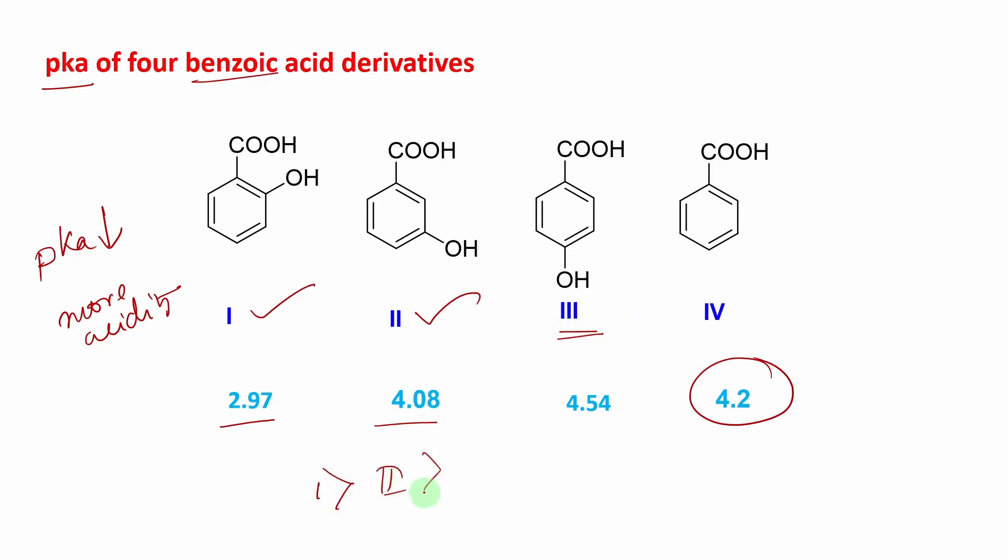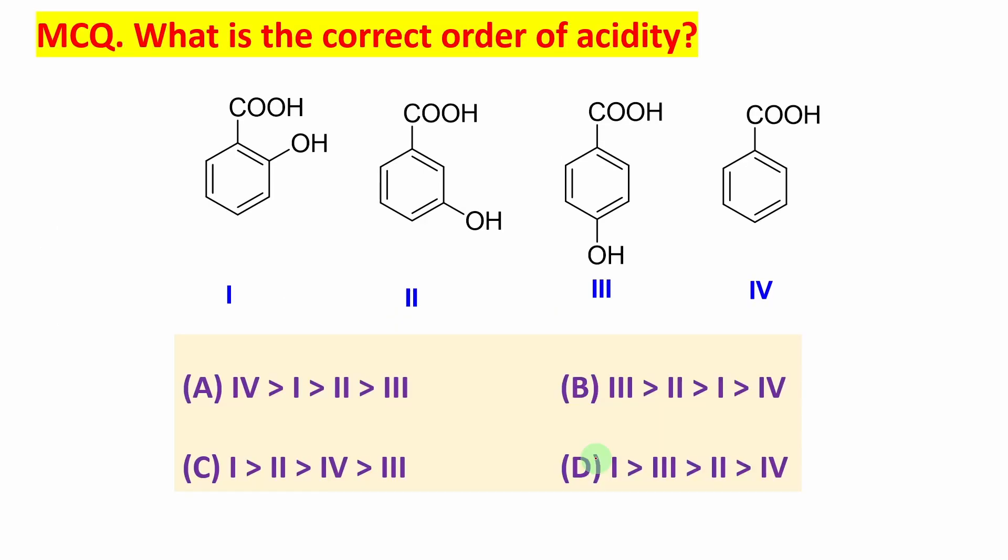So what is actually the order? I > II > IV > III. Now if you look here, students, what is the correct order of acidity? I guess option C. Now if you don't know the answer, how can you find out? First, you need to know this is maximum acidic because of intramolecular hydrogen bonding. Second thing, who is minimum acidic? This option.